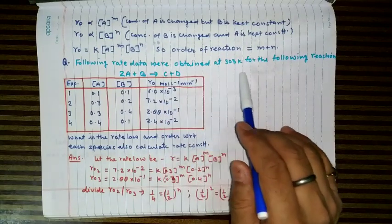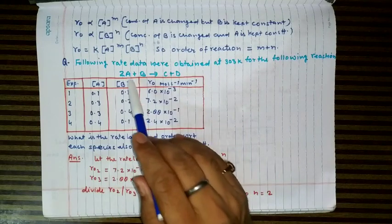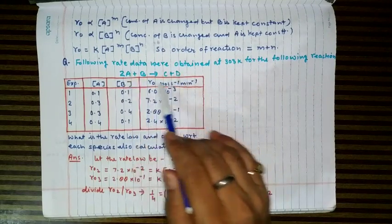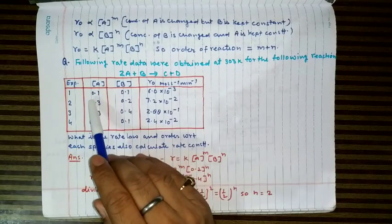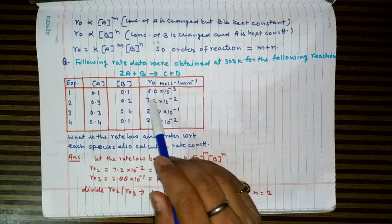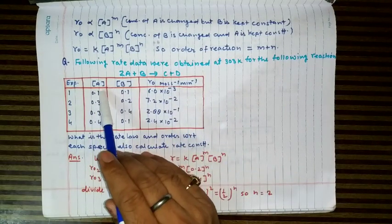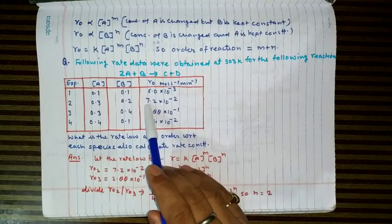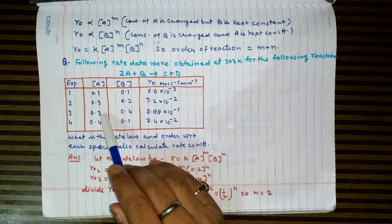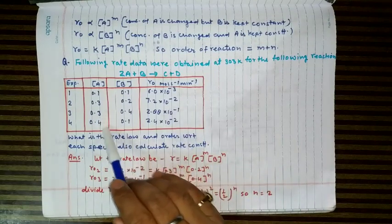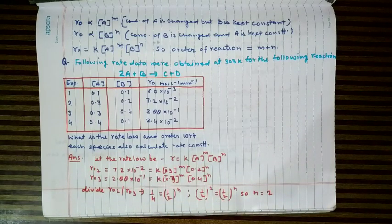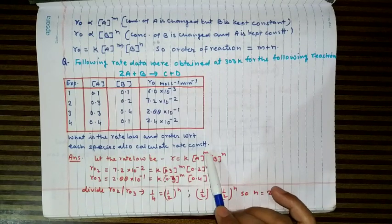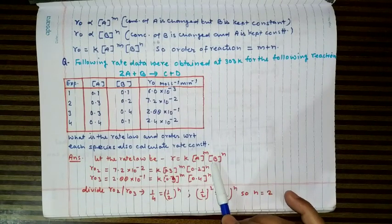Following rate data were obtained at 303 K for the reaction 2A + B → C + D, with four experiments. Experiment 1: [A]=0.1 M, [B]=0.1 M. The rate expression is assumed as r = k[A]^m[B]^n. We first find order with respect to B by selecting experiments where [A] is constant, then find order with respect to A where [B] is constant.